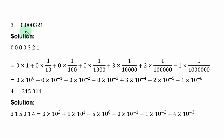Example 3: express 0.000321 in expanded notation. Decimal points to the left are whole numbers and to the right are decimal. The 0 to the left is units. The digits to the right are decimal parts: the first position after the decimal point is tenths (1 over 10), the next is hundredths (1 over 100), then thousandths (1 over 1000), and so on. So we have 0 times 1 for the unit, plus 0 times 1 over 10, plus 0 times 1 over 100, plus 0 times 1 over 1000.